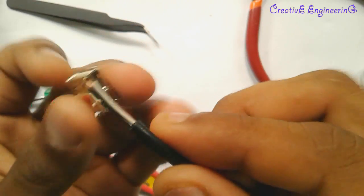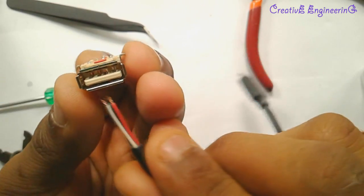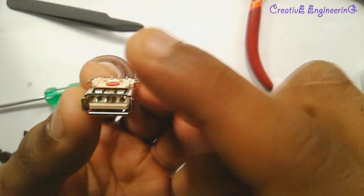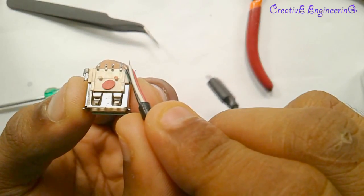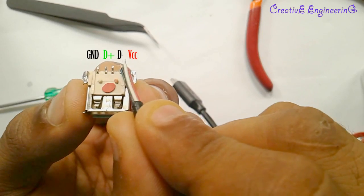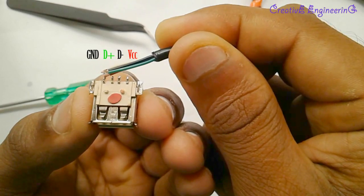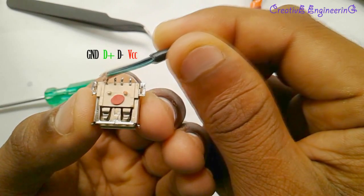Now we're going to solder these wires to the USB port. For proper connection first align in this orientation. The right side pin is the VCC, left side is the ground pin. The pin which is near to the VCC is the D-minus pin. The pin which is near to the ground is the D-plus pin.